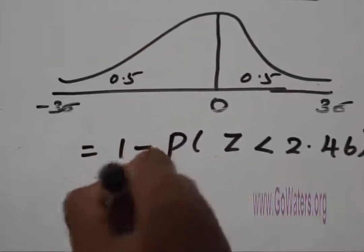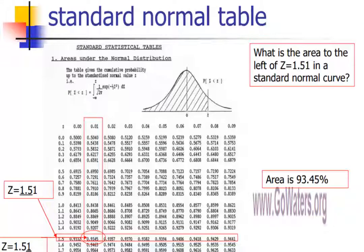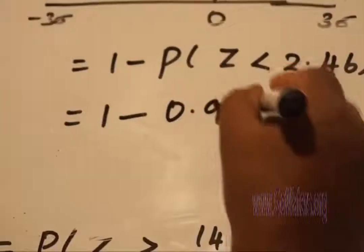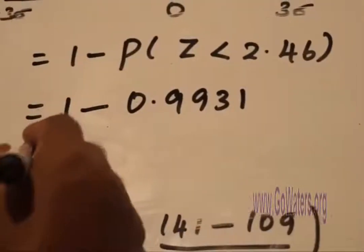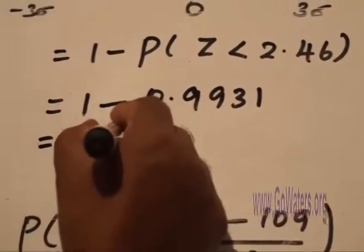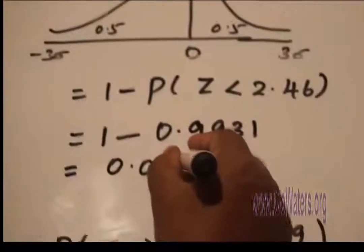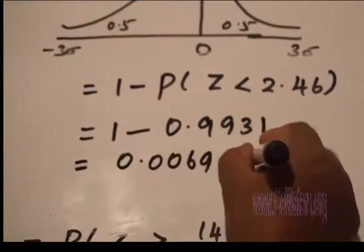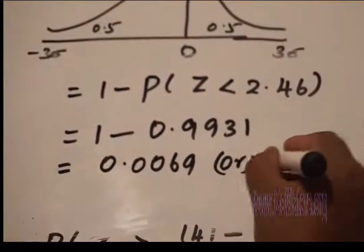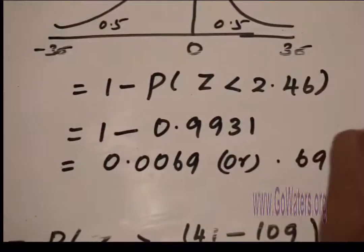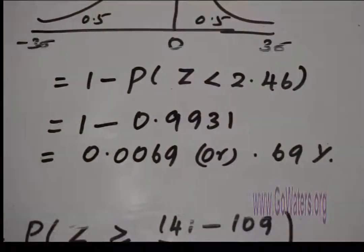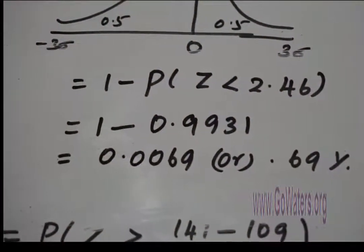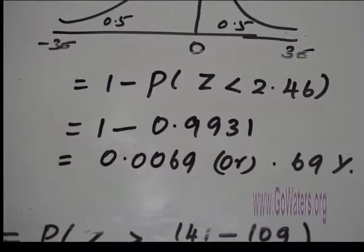So this equals 1 minus—you can look at the table here—0.9931, which equals 0.0069 or 0.69%. So almost 1% chance that a child is born with 141 ounces or more as birth weight.